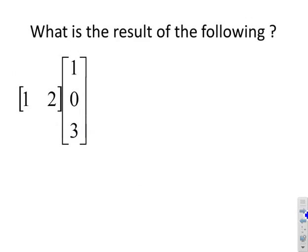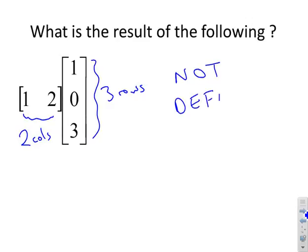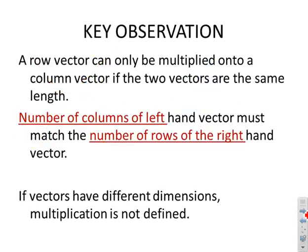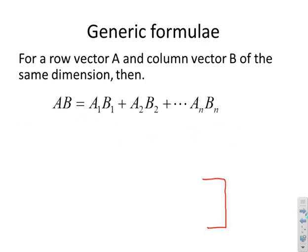What about this one? Here you'll notice there are two columns and three rows. The answer is: multiplication is not defined. If someone gives you this, you put a big red cross and say they don't know what they're doing. Key observation: a row vector can only be multiplied onto a column vector if the two vectors are the same length. The number of columns of the left-hand vector must match the number of rows of the right-hand vector; if they have different dimensions, multiplication is not defined.